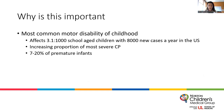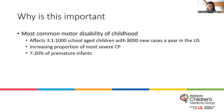Cerebral palsy is the most common motor disability of childhood. It affects about three in a thousand school-aged children, with 8,000 new cases a year — though that is older data and it's probably more than that. There is an increasing proportion of the most severe type of CP because we are getting better at taking care of very sick children. About seven to 20% of premature infants will ultimately have a diagnosis of CP. Worldwide, prevalence is estimated at 1.5 to 4 per thousand live births, similar to what we see in the United States.